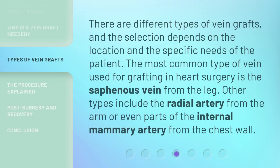There are different types of vein grafts, and the selection depends on the location and the specific needs of the patient. The most common type of vein used for grafting in heart surgery is the saphenous vein from the leg. Other types include the radial artery from the arm, or even parts of the internal mammary artery from the chest wall.